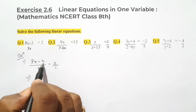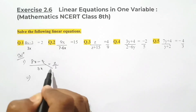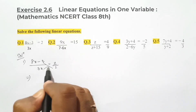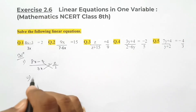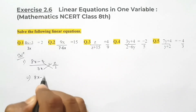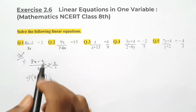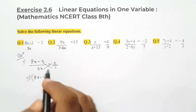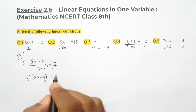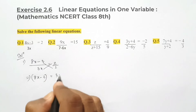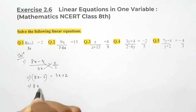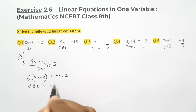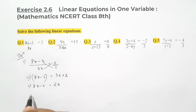Now we can do cross multiplication — that is numerator into denominator of the opposite side and denominator into numerator of the opposite side. Any number multiplied by 1 is the same number, so 8x minus 3 into 1 is (8x - 3), and here 3x into 2. So we can write 8x - 3 = 2 × 3x = 6x.